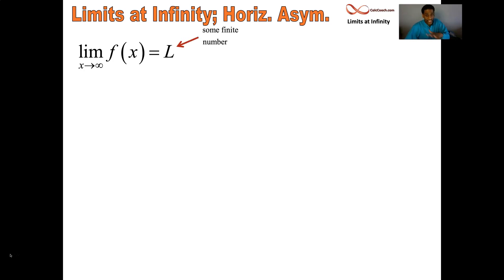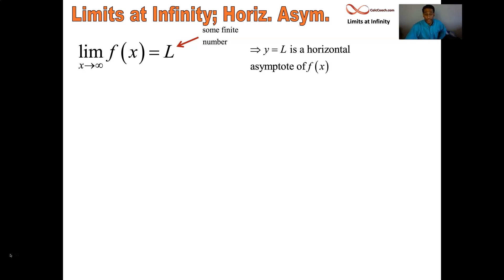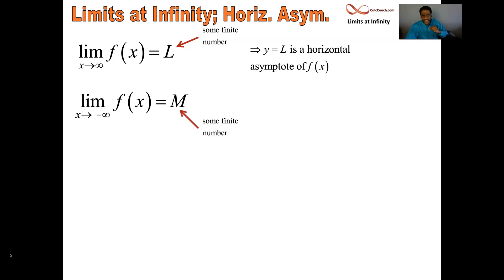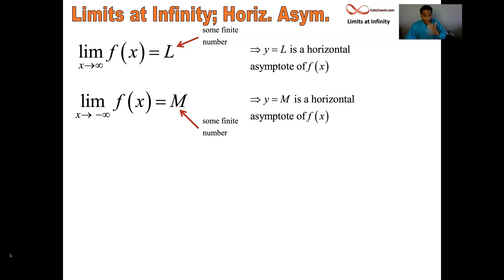If it happens to be that the limit is some finite number L, then we say the line y equals L is a horizontal asymptote of that function. And nothing special about infinity — we could have the limit as x goes to negative infinity equal to some finite constant, and still the line y equals that finite constant is a horizontal asymptote of your function.